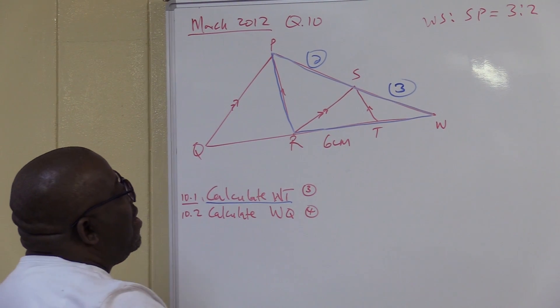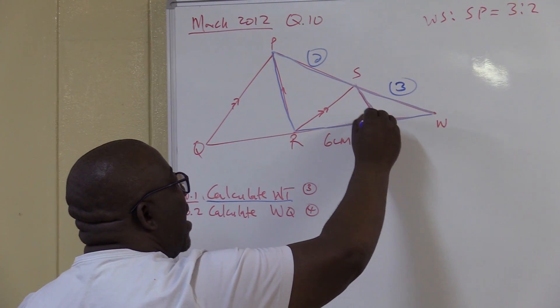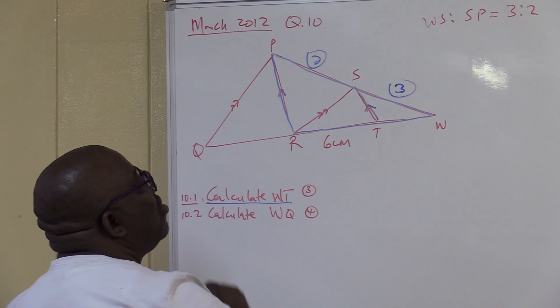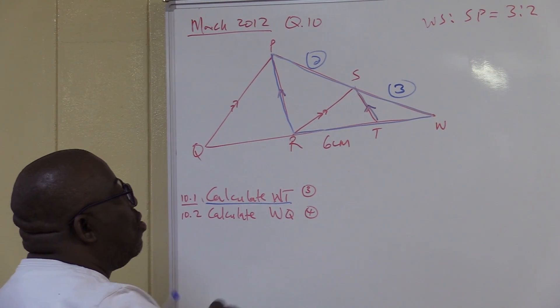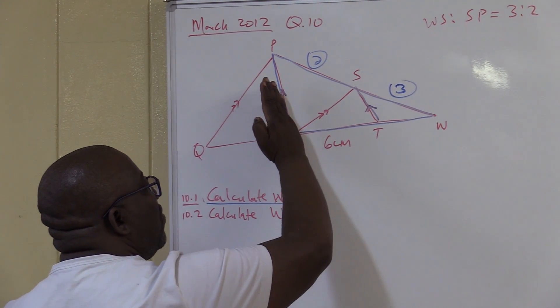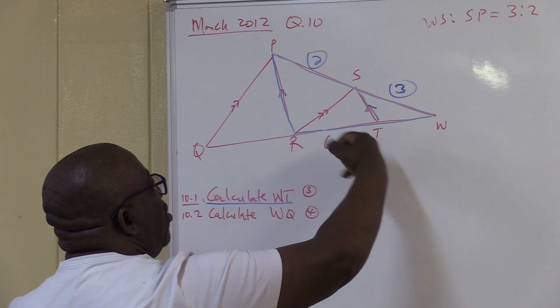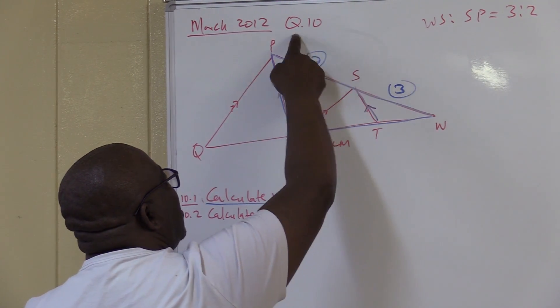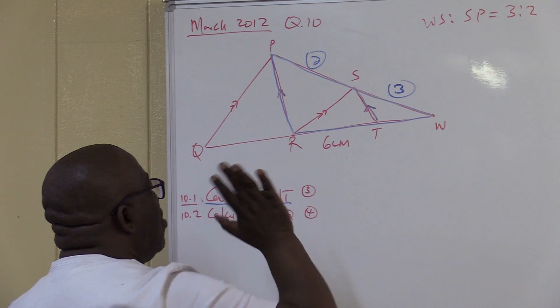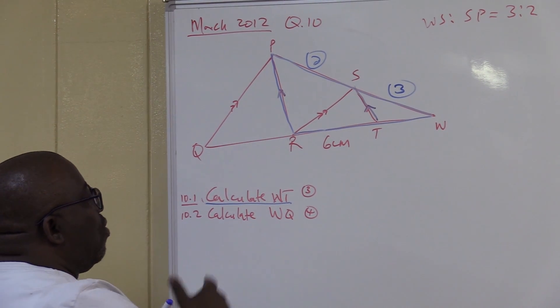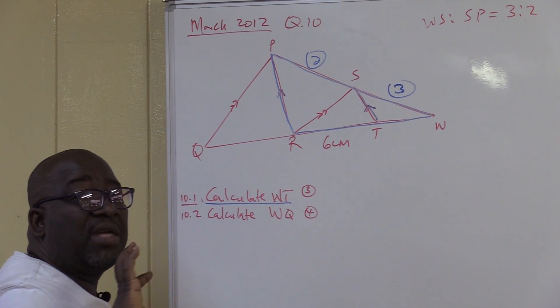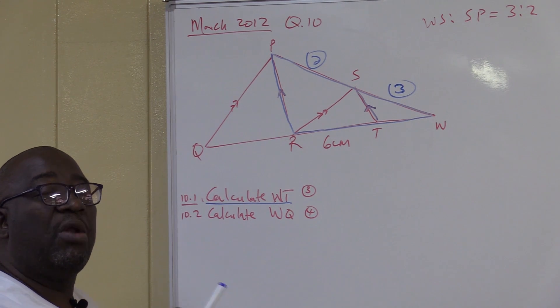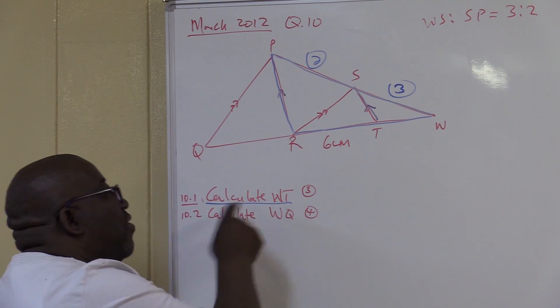When you look at this triangle, there is a line drawn parallel to one side. I'm just trying to locate the theorem. A line drawn parallel to one side of a triangle divides the other two sides proportionally. In other words, this over that is equal to that over that. That's all that is being asked when we're required to find WT. It is advisable that you start with what you're looking for. In this case, we're looking for WT.